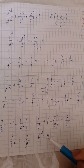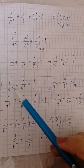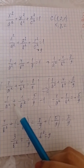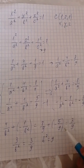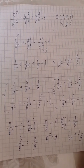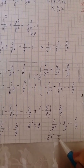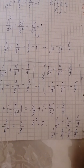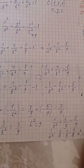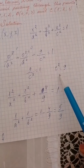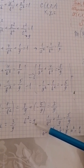Now that we know b squared equals 9, we substitute back into the first equation: 1 over a squared plus 1 over 9 equals 5 over 9. So 1 over a squared equals 5 over 9 minus 1 over 9, which equals 4 over 9. Therefore a squared equals 9 over 4.